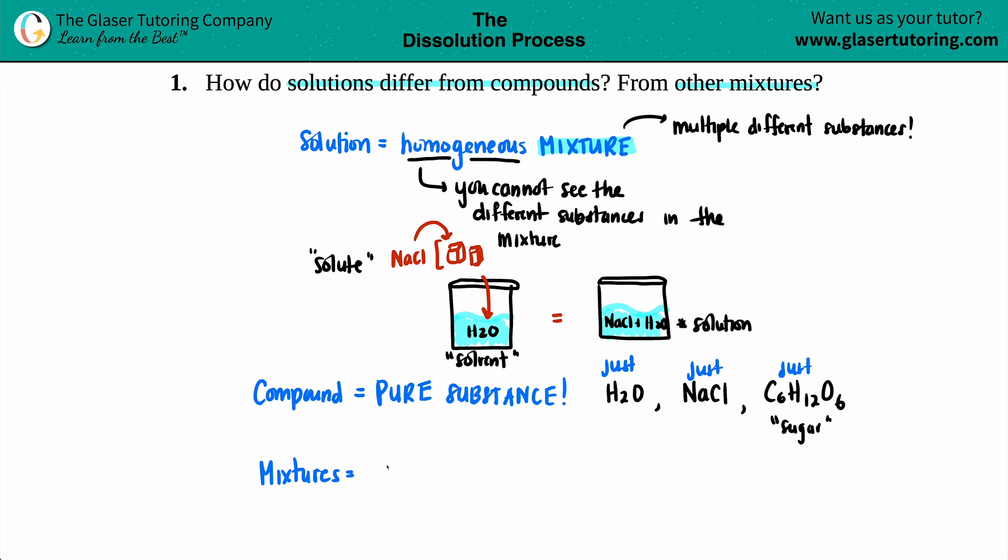Other mixtures, there are homogeneous and then there's heterogeneous. The homogeneous mixture, one example is a solution where you have multiple substances coming together and you can't tell the difference between what the substances are. Heterogeneous is where you can clearly see the different substances, whether you can clearly see the different elements coming together or the different compounds coming together.